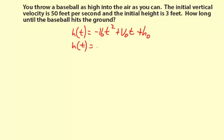So, what do we know? Well, we know that 16 is 16, so we can just leave that. Initial vertical velocity is 50 feet per second, so plus 50t. Initial height is 3 feet, so that's our h₀ plus 3.